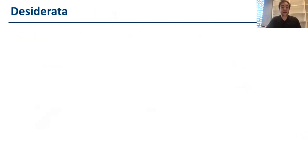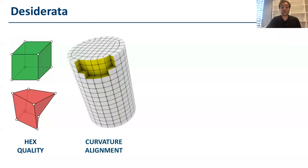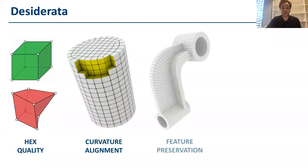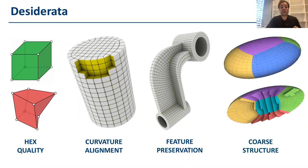The goodness of a hex mesh is defined by global and local characteristics. For example, the geometric quality of its individual elements, their alignment to the curvature direction, also the mesh should preserve the sharp features, and finally the elements should be globally organized into blocks.